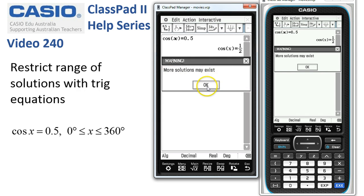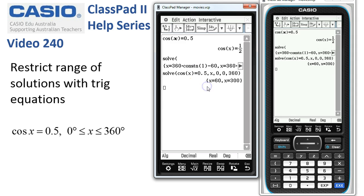ClassPad warns us that solutions may exist outside this range, but there are the two it found within the range: 60 and 300 degrees. That's a fairly good way of doing it.